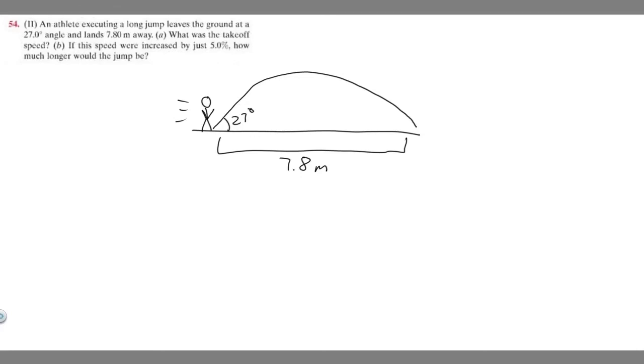In this problem we're told an athlete executing a long jump leaves the ground at a 27 degree angle and lands 7.8 meters away. What was the takeoff speed? And if the speed were increased by just 5%, how much longer would the jump be?